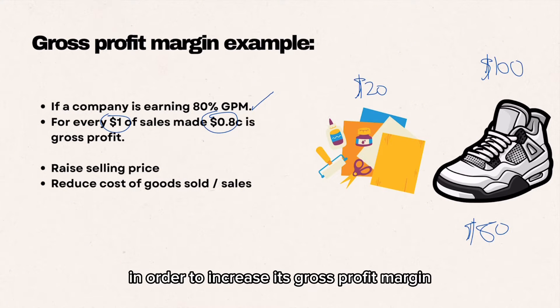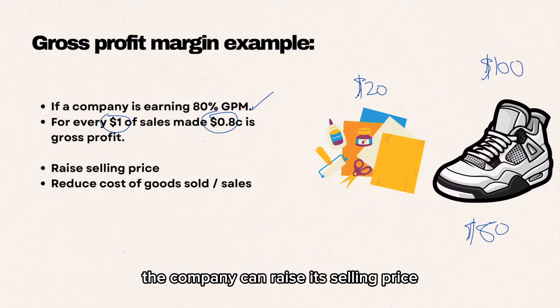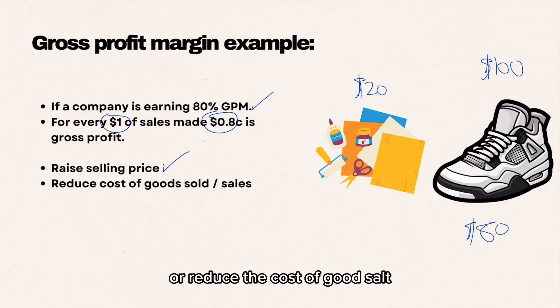In order to increase its gross profit margin, the company can raise its selling price or reduce the cost of goods sold.